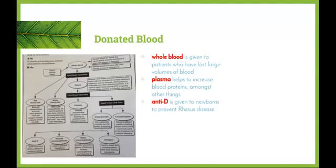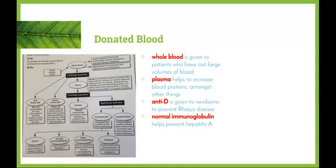Anti-D is a substance that you can get out of a whole blood donation that can be given to newborns to prevent a disease called Rhesus disease. Normal immunoglobulin helps to prevent hepatitis A, so patients who are susceptible to hepatitis A can be given this in order to help prevent the disease.